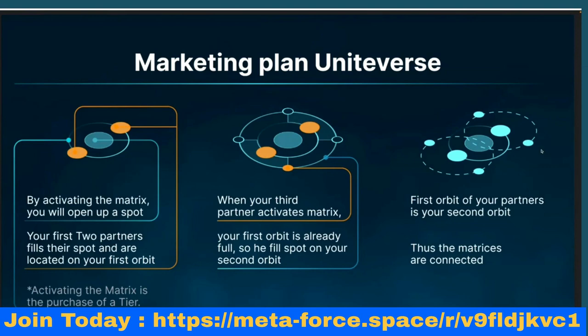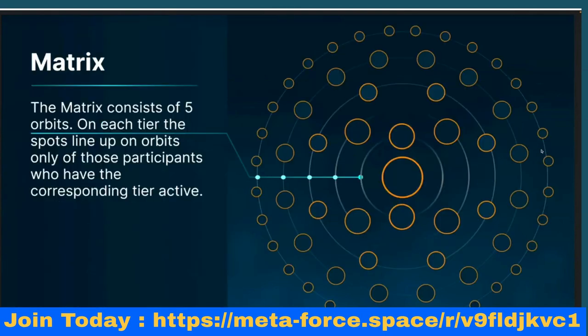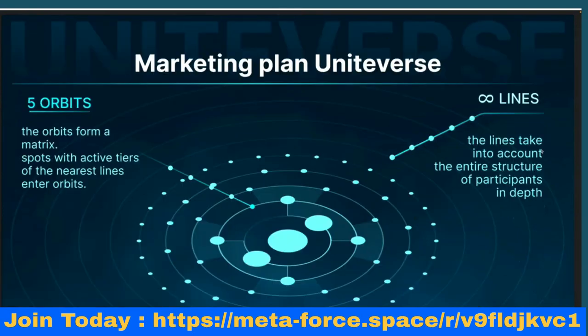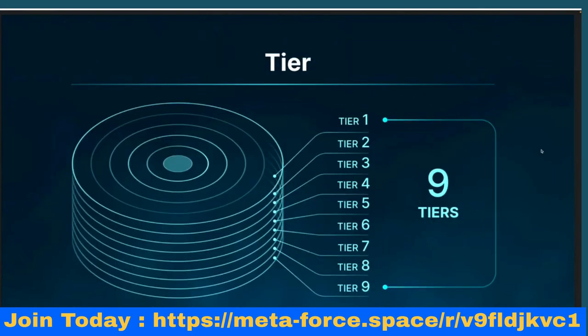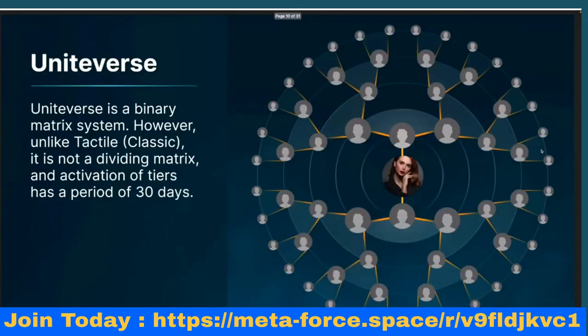Let's look at the marketing plan of UniVerse. By activating the matrix you open up a spot. Your first two partners fill their spots and are located on your first orbit. When a third partner activates the matrix, your first orbit is already full, so they fill a spot on your second orbit — the first orbit of your partners is your second orbit. The matrix consists of five orbits on each tier. Spots line up on orbits only for participants who have the corresponding tier active.